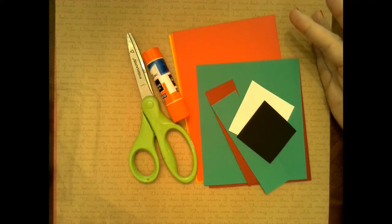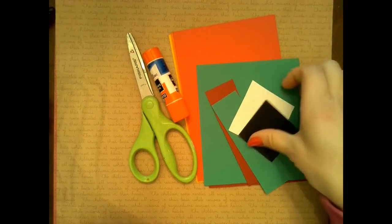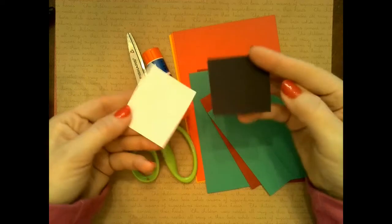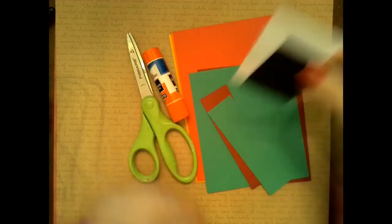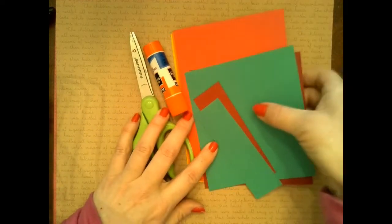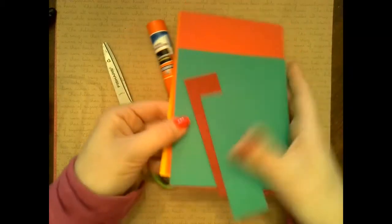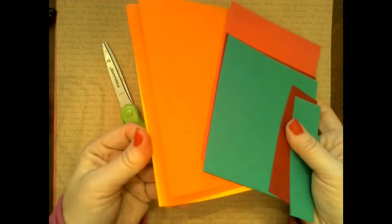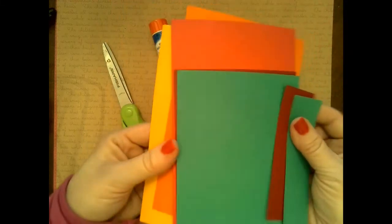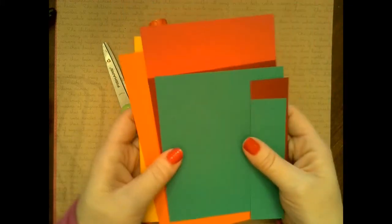So first of all I have two little pieces of paper, a white piece and a black piece. And then I have just an array of colors that I found. You can just get construction paper, small pieces, bigger pieces, whatever you find. But you want a nice selection of color.